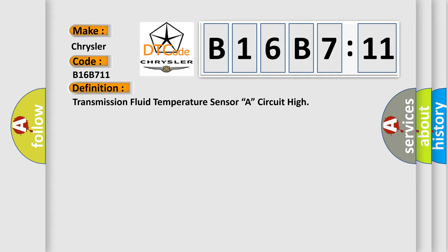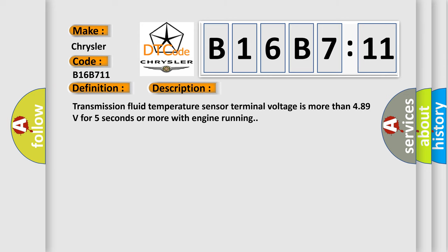And now this is a short description of this DTC code. Transmission fluid temperature sensor terminal voltage is more than 4.89 volts for five seconds or more with engine running.